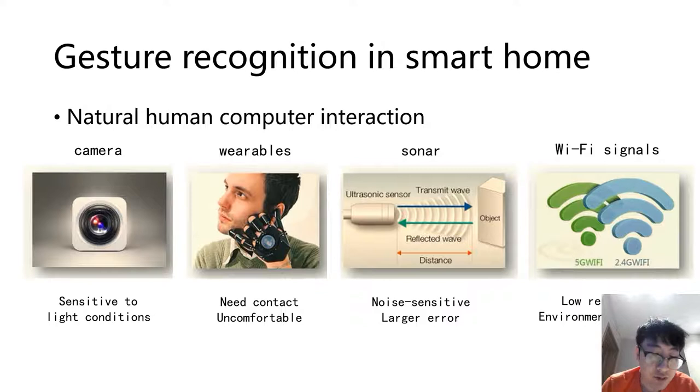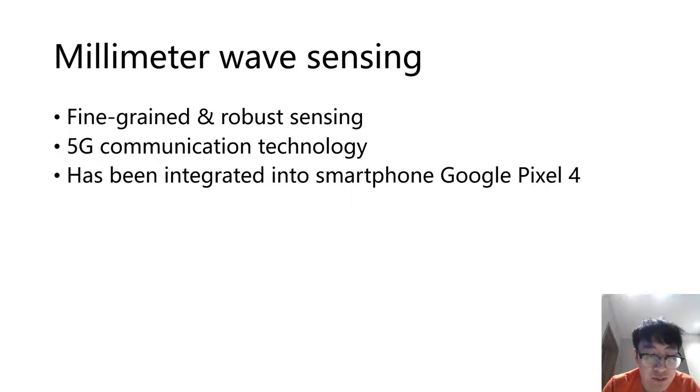Beyond Wi-Fi signals, millimeter wave represents a new sensing medium with the potential of fine-grained and robust sensing ability. Besides, as a main value of the emerging 5G technology, mmWave radios are anticipated to be integrated on massive IoT devices or smartphones. For instance, mmWave radar has already been integrated into the recently released smartphone Google Pixel 4 with the promise of being a ubiquitous sensing tool.